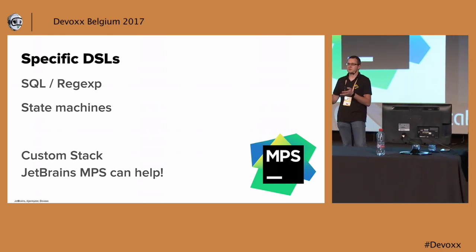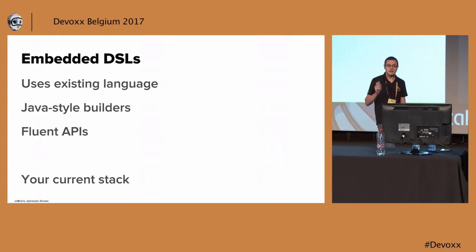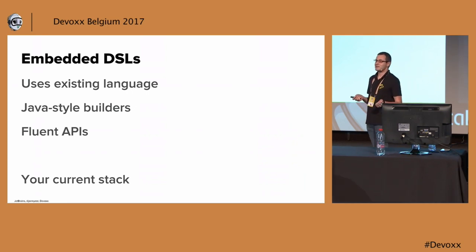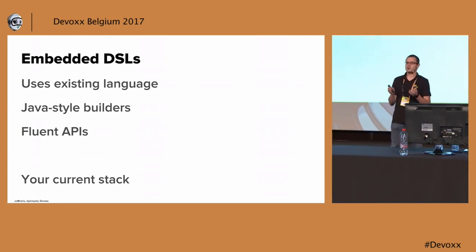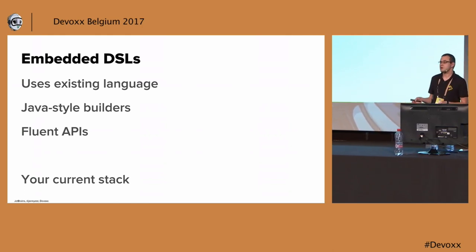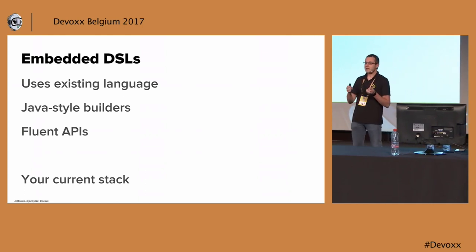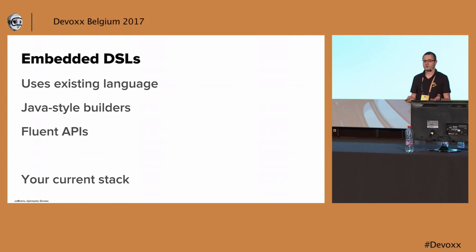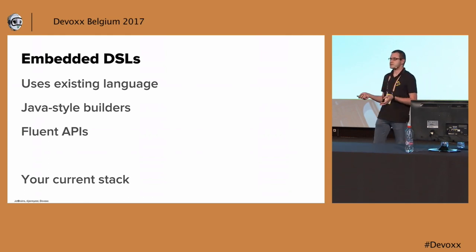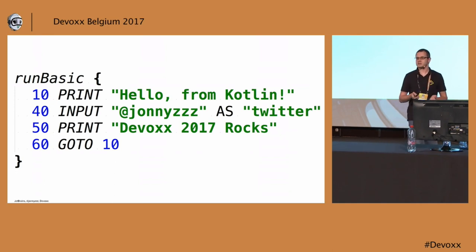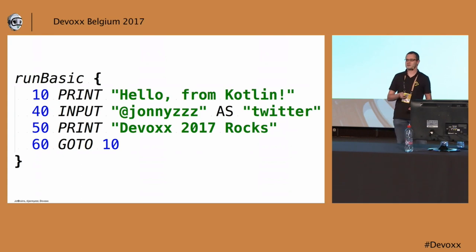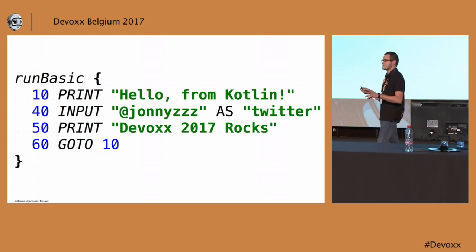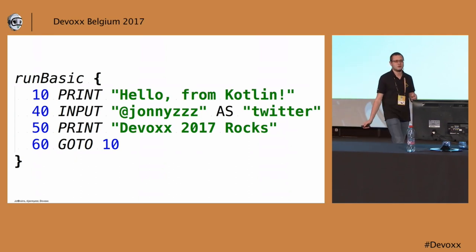You might take a look at JetBrains MPS if you really desire to create such a complicated language. There is yet another and pragmatic way of creating languages: to use your existing language, which you're using for your project, to create something you need. Examples are fluent APIs or builders, which we tend to use in Java for years. This may help us to create something which is more readable and better understandable, which helps you to express what you need for your use case. And the nice thing — you can use existing stack for it. This is an example of a DSL, and in my slides all examples are valid Kotlin programs.